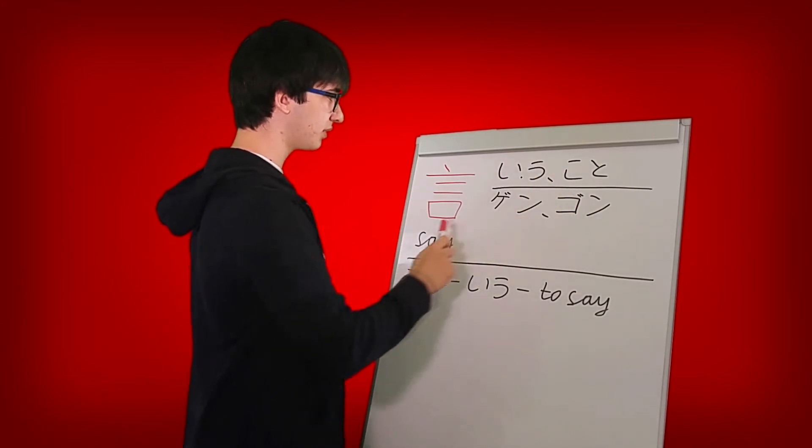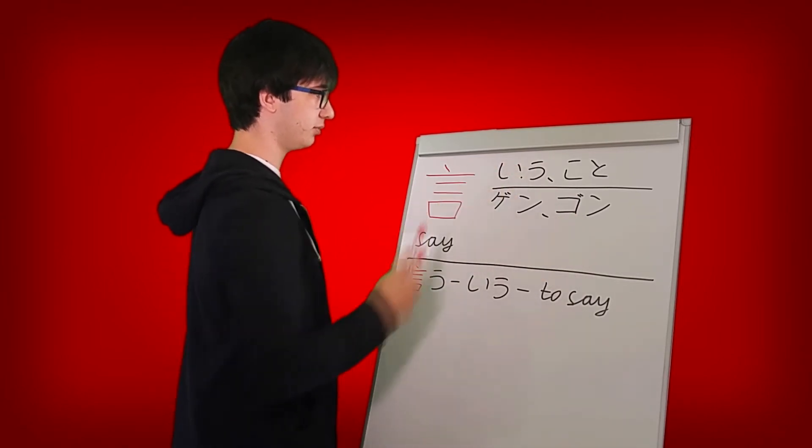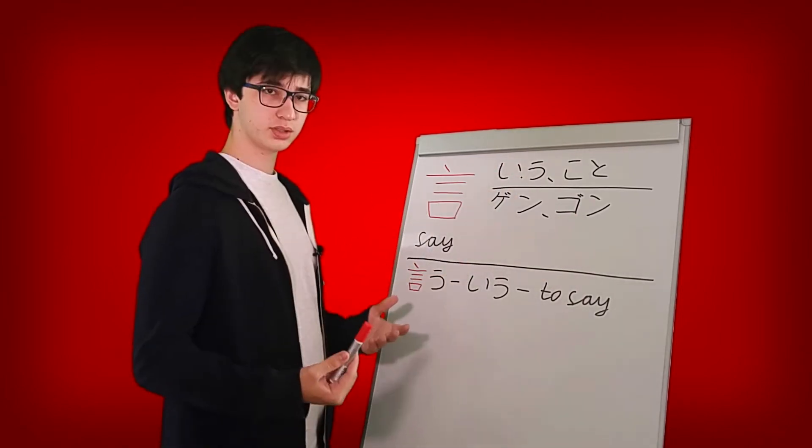The next reading is KOTO and the onyomi are GEN and GON. But for today we'll only need the reading U and the meaning of this kanji is just SEI. Now let's look at the stroke order.